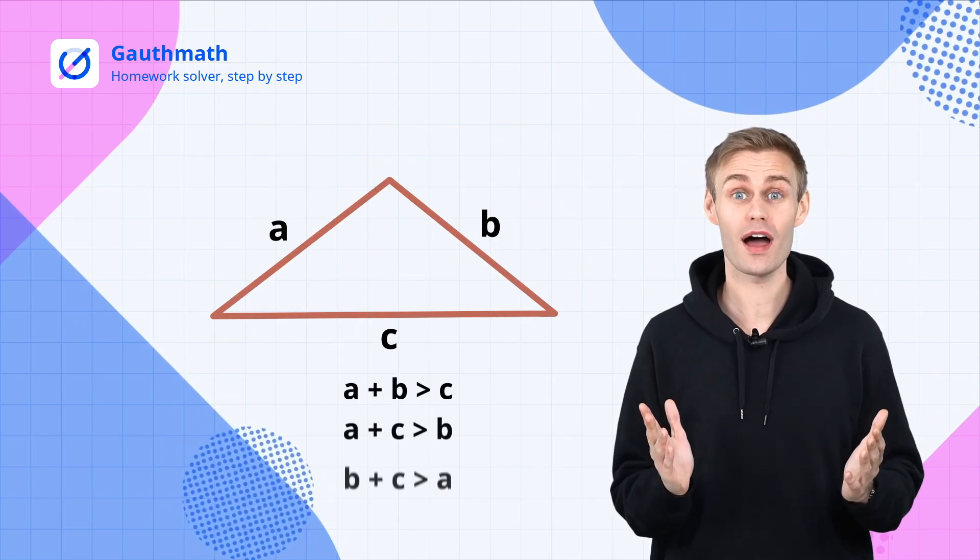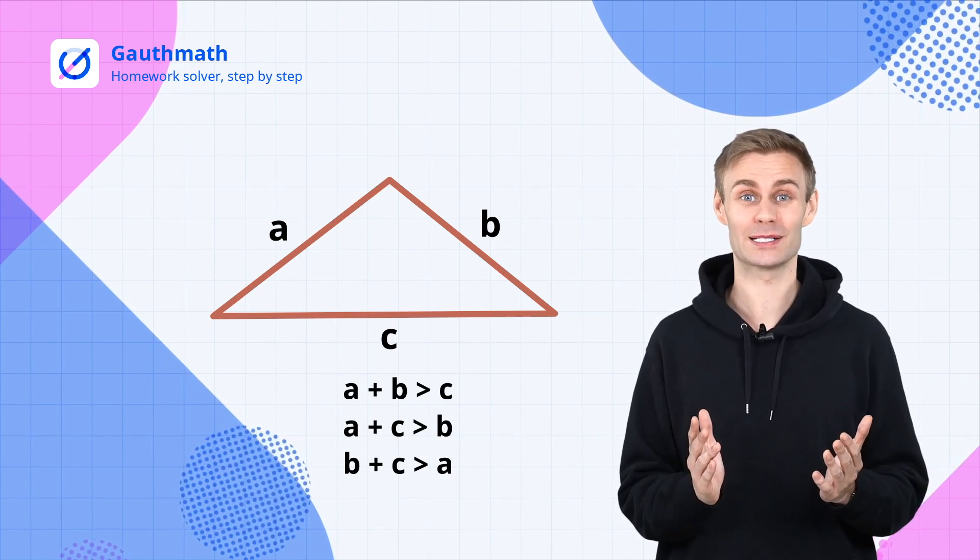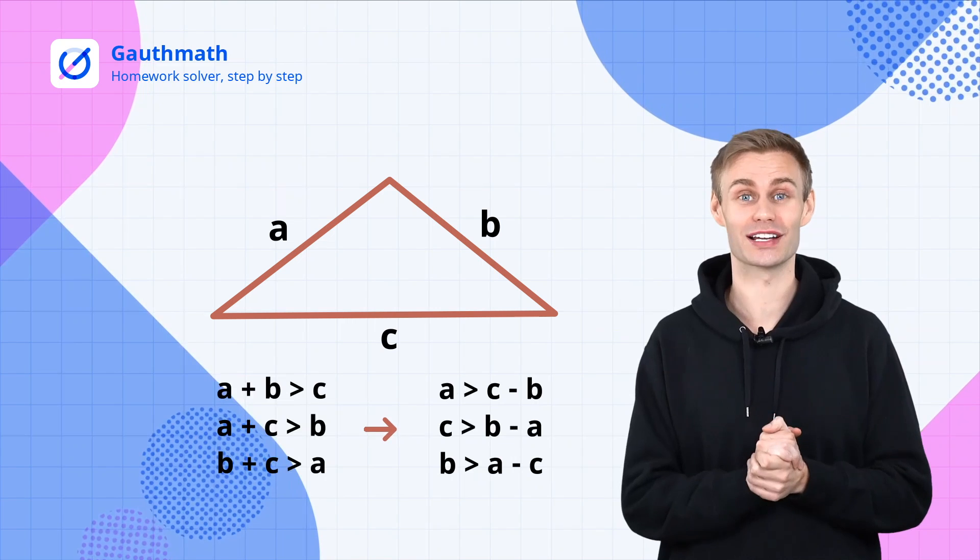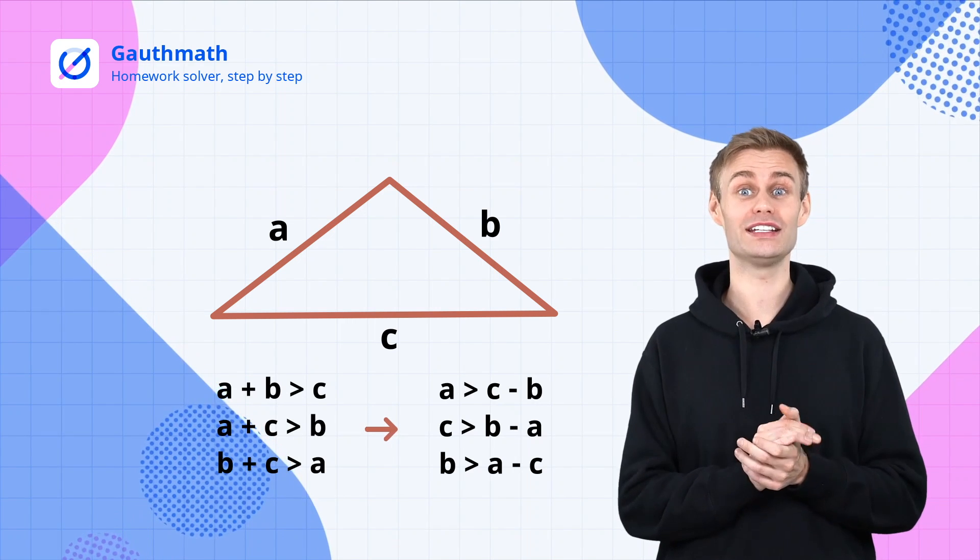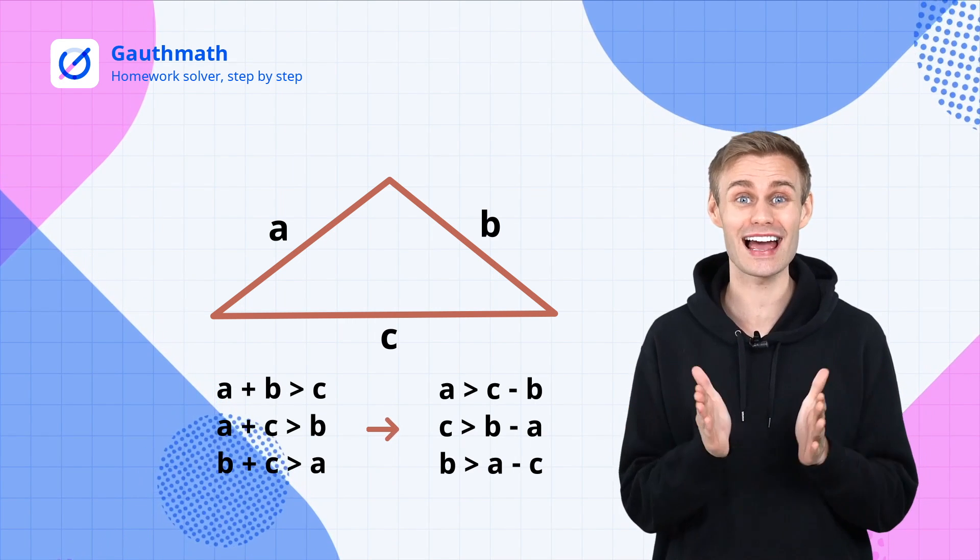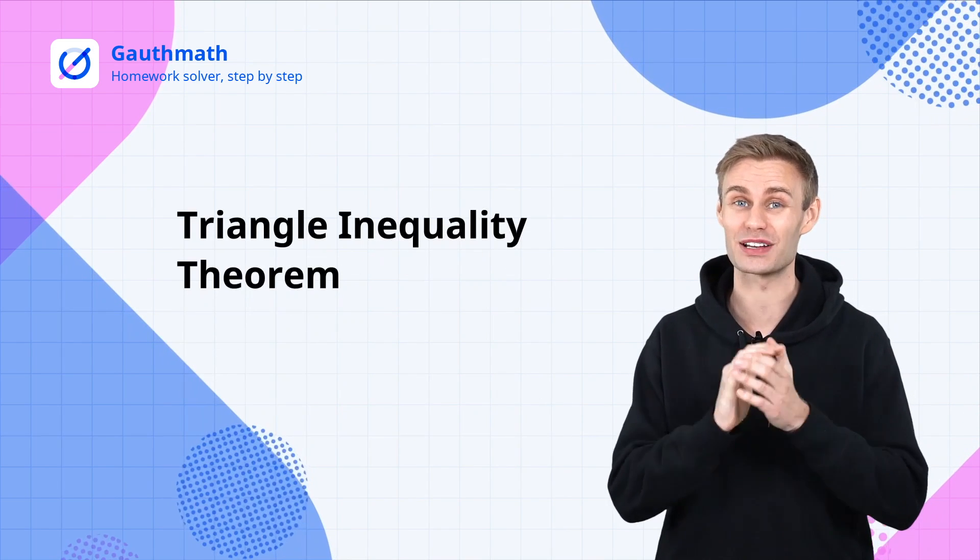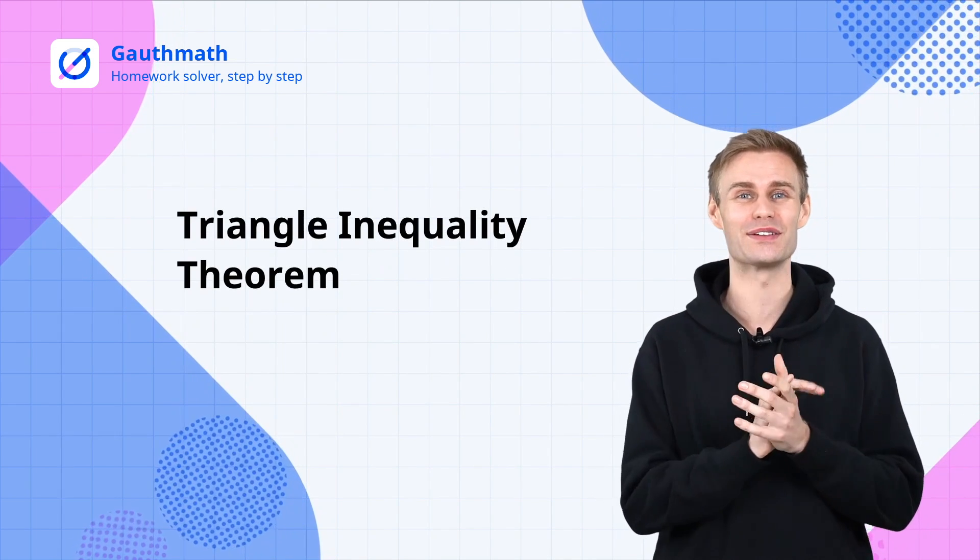Thus we get the triangle inequalities theorem by the inspiration from Euclid. There's another constraint of constructing a triangle. The difference of any two sides of a triangle is less than the third side. This one together with the previous constraint are known as the triangle inequality theorem.